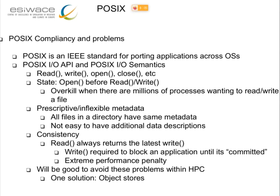POSIX is an IEEE standard for porting applications across different operating systems. POSIX IO is part of POSIX and it's a way of accessing data through read, write, open, and close semantics. There are some very strict constraints with POSIX — for example, you have to have an open system call before read and write, and open has its overheads. Especially when you have millions of processes wanting to read and write, it's an absolute overkill.